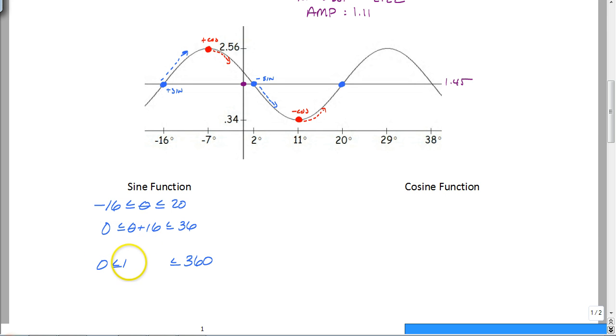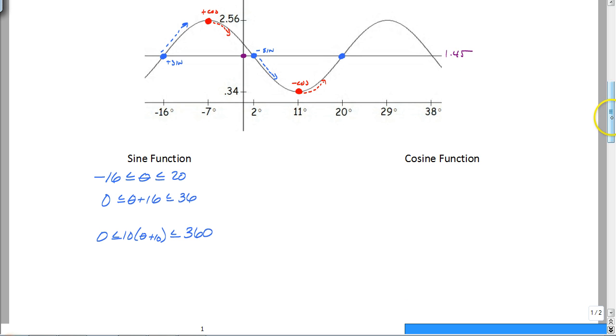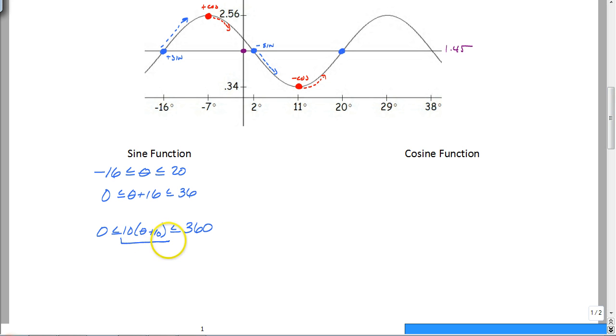So that's going to give you a zero, and this is 10 times theta plus 16, and guess what? You've got all the information you really need right now. So to write this sine function, remember, the big part of it is right here in the middle. So what you're going to do is you're going to have your y equals.